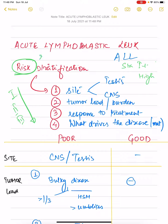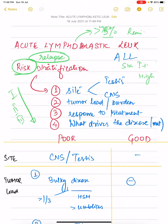In ALL, instead of staging, we use risk stratification or risk classification. This risk denotes the risk of relapse. ALL is one of the very treatable malignancies — more than 95 to 98 percent of children actually go into remission. However, they tend to relapse sooner or later, and we have to prevent this relapse. That's why the risk of relapse is predicted by this stratification.